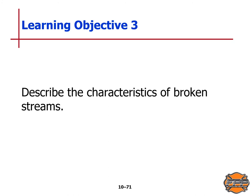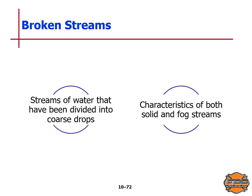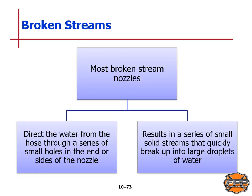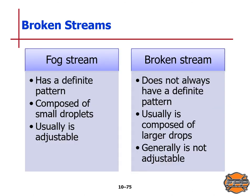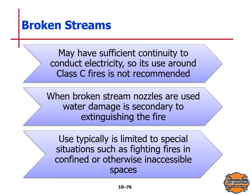Learning objective four: describe the characteristics of broken streams. Streams of water that have been divided into coarse drops are considered broken streams — they share characteristics of both solid and fog streams. Most broken stream nozzles direct water through a series of small holes in the end or sides of the nozzle, resulting in small solid streams that quickly break up into large droplets. Broken streams absorb more heat per gallon or liter than a solid stream and have greater reach and penetration than a fog stream. Unlike fog streams, broken streams do not always have a definite pattern, are usually composed of larger drops, and are generally not adjustable. Broken streams may have sufficient continuity to conduct electricity, so their use on Class C fires is not recommended.